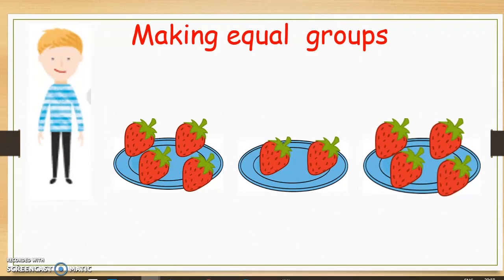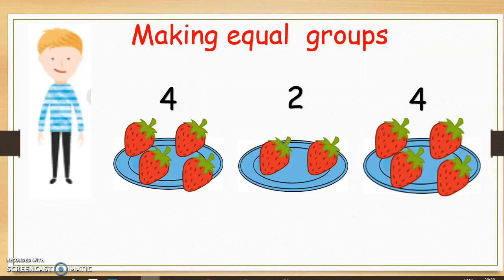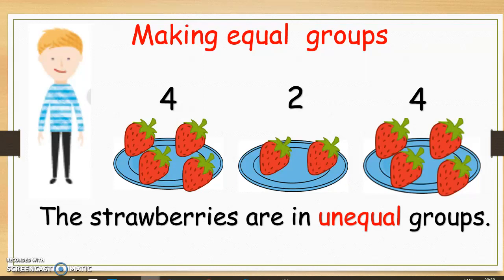Now let's have a look at Sam. Sam put four strawberries on the first plate, two strawberries on the next plate, and four strawberries on the last plate. Are these groups equal? No, the strawberries are not in equal groups.